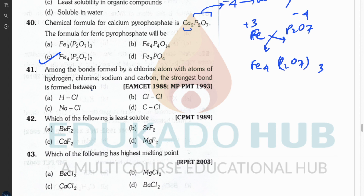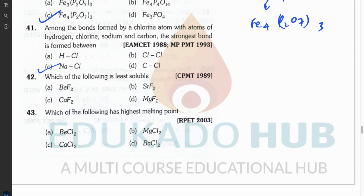Question forty-one: among bonds formed by chlorine with hydrogen, chlorine, sodium, and carbon, which is the strongest? The strongest bond is ionic, formed between the cation and anion. The most electropositive element among the options paired with chlorine gives the strongest bond — answer is C.